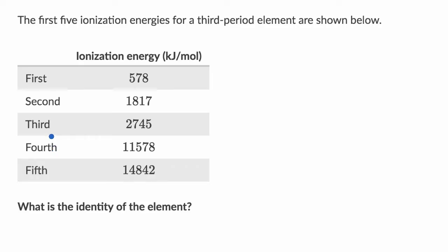So before I even look at a periodic table of elements, let's make sure we understand what this table is telling us. This is telling us that if we start with a neutral atom of this mystery element, it would take 578 kilojoules per mole to remove that first electron, to turn that atom into an ion with a plus one positive charge.